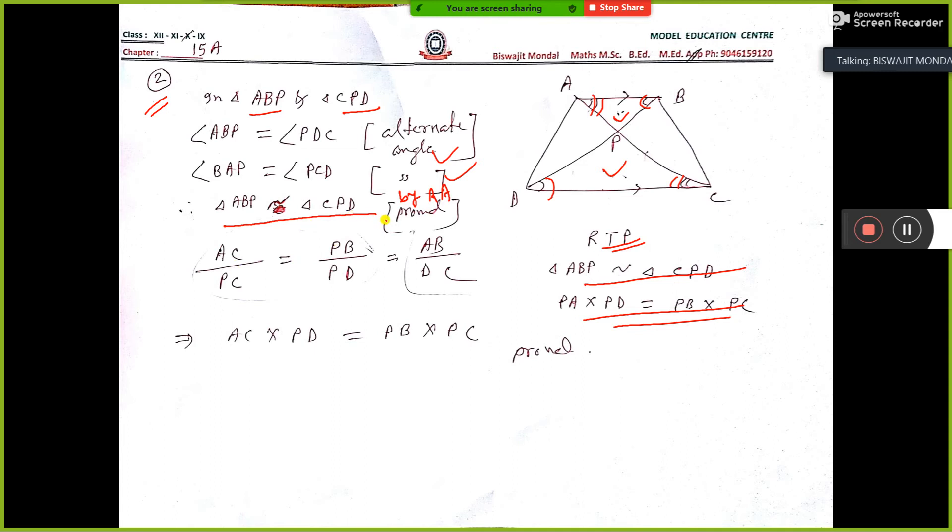So if these two triangles are similar, corresponding sides are also proportional, that means ratio same. So it will be AP by PC. See here, AP by PC is equal to BP by PD is equal to AB by DC.